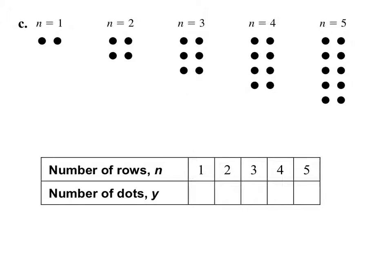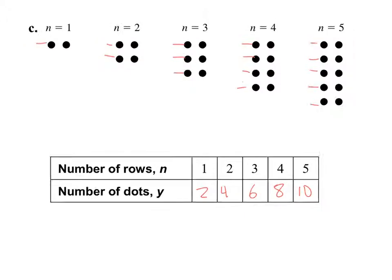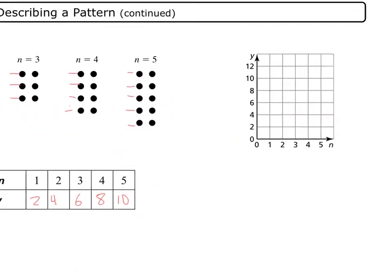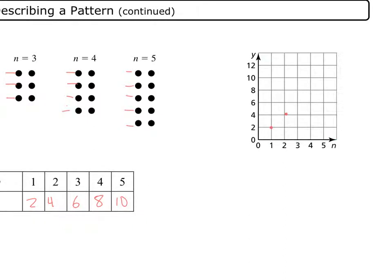Here we have another pattern. We should get numbers like this: for the first row, two dots; second row, four dots; third row, six; then eight; and if we have five rows, we have ten. We see a pattern of even numbers: two, four, six, eight, ten. We're not going to connect the line because it is not a linear relationship — this is what we call a sequence. This list of numbers is called a sequence.